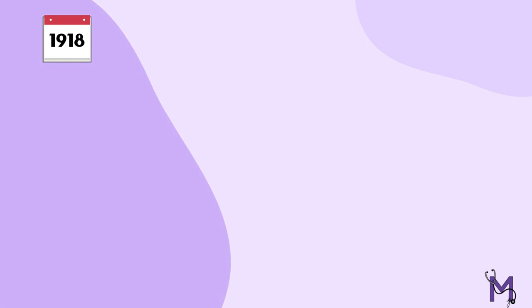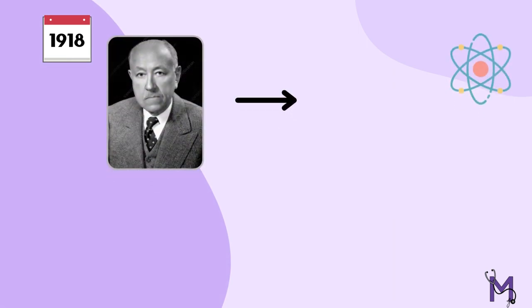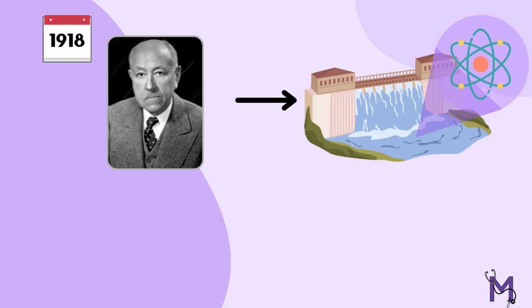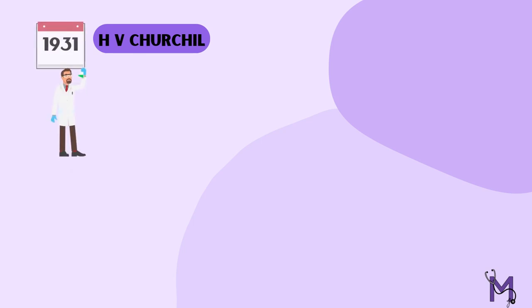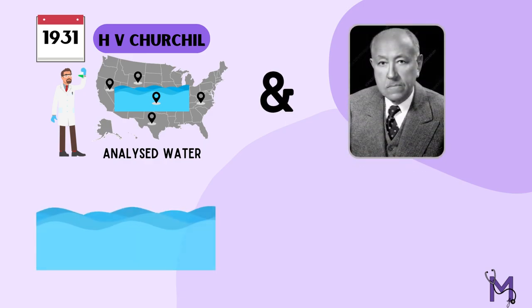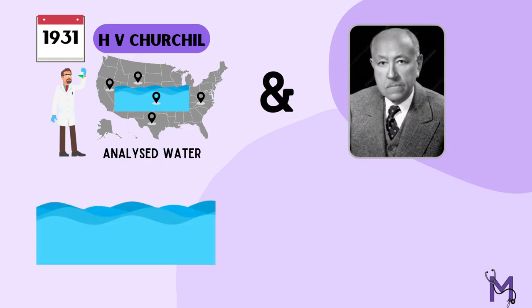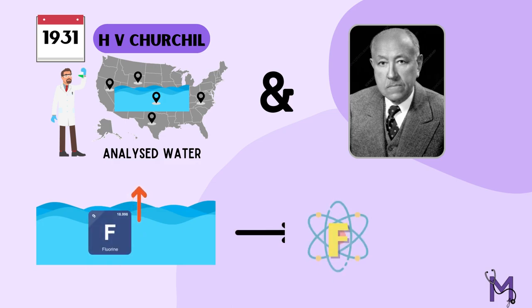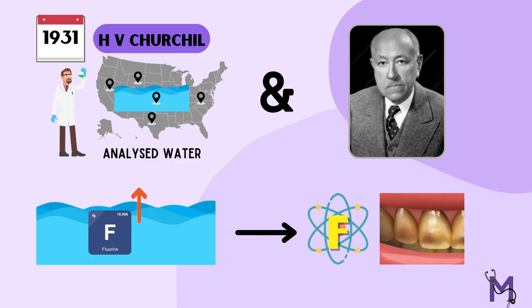In 1918, McKay confirmed the presence of an unknown element in the water supply as the definitive causative factor for enamel mottling. H.P. Churchill, a chemist, in 1931 analysed the water in various regions. He, along with McKay, conducted water analysis in areas with mottling of enamel and found increased levels of fluoride in the water. This led to the conclusion of fluoride being the mysterious factor in the causation of the mottled appearance of the enamel.